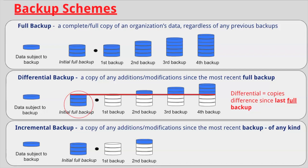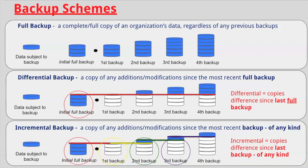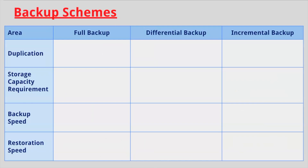The third backup has one piece of data which is subject to backup. This is because there was one addition or modification since the most recent backup, which was the second backup. The fourth backup also has one piece of data subject to backup, because there was one addition or modification since the most recent backup, which was the third backup. When looking at an incremental backup, use the most recent backup of any kind and compare it to the backup at hand — any differences between the two are subject to backup.